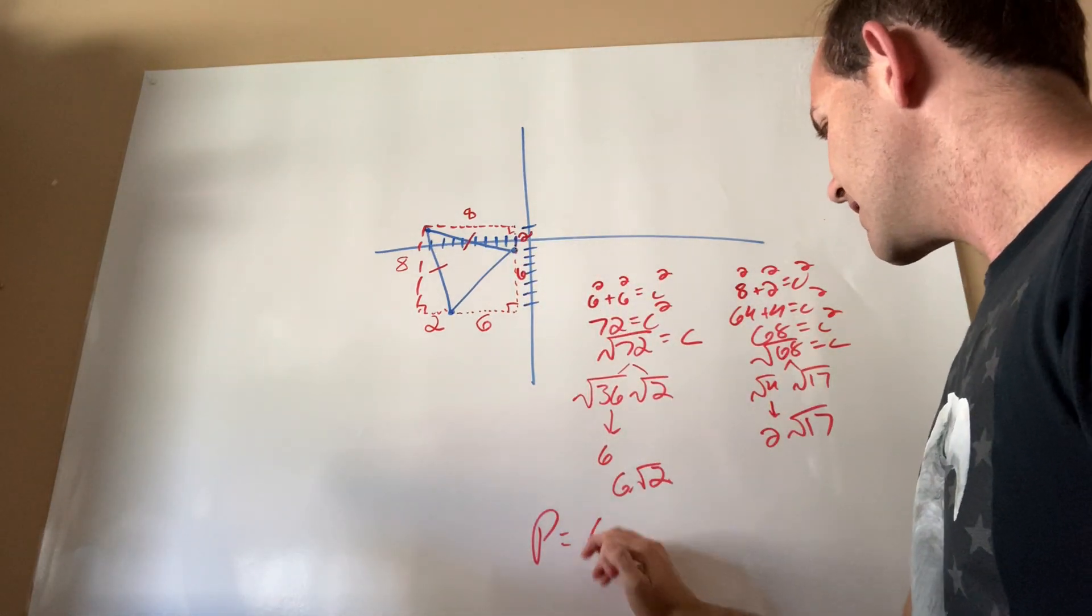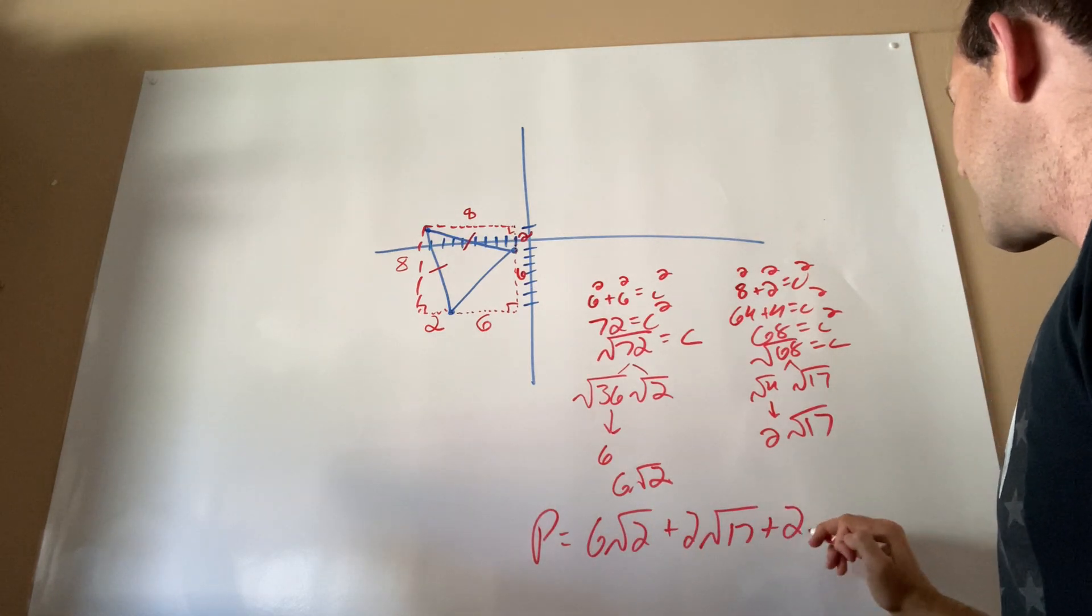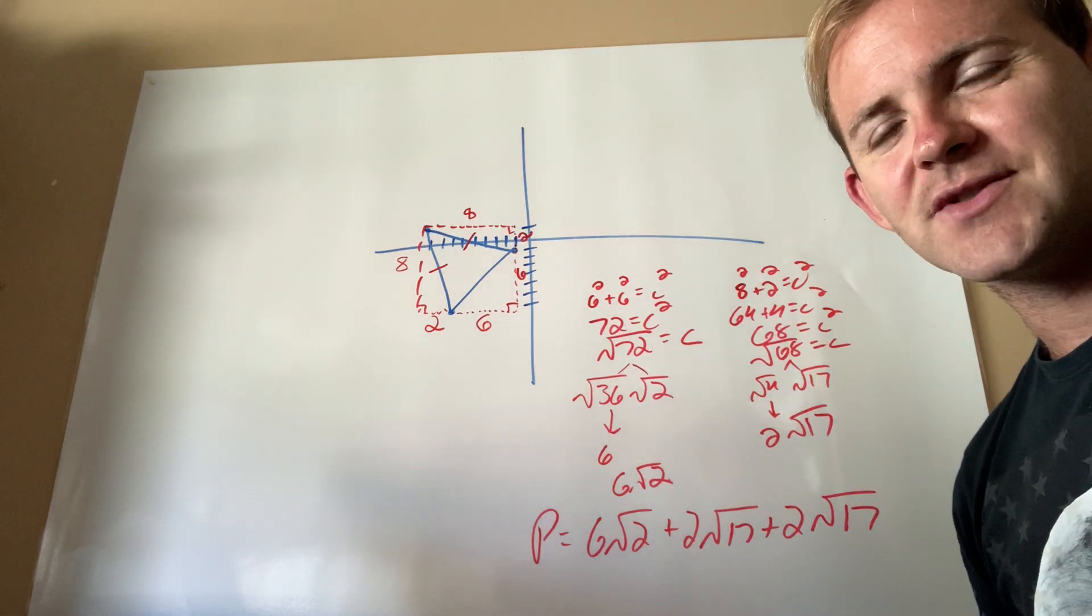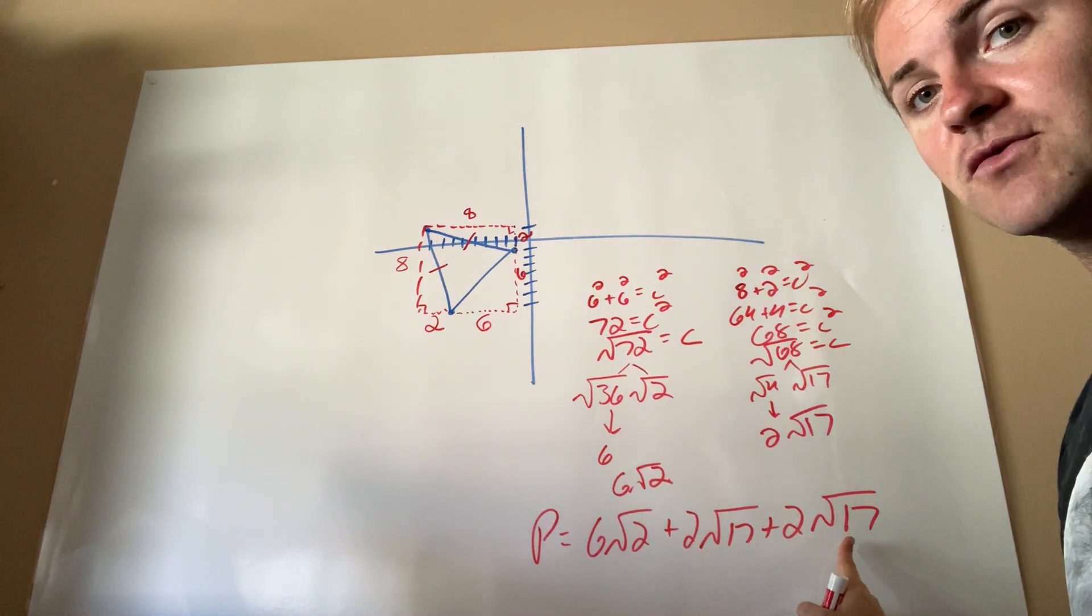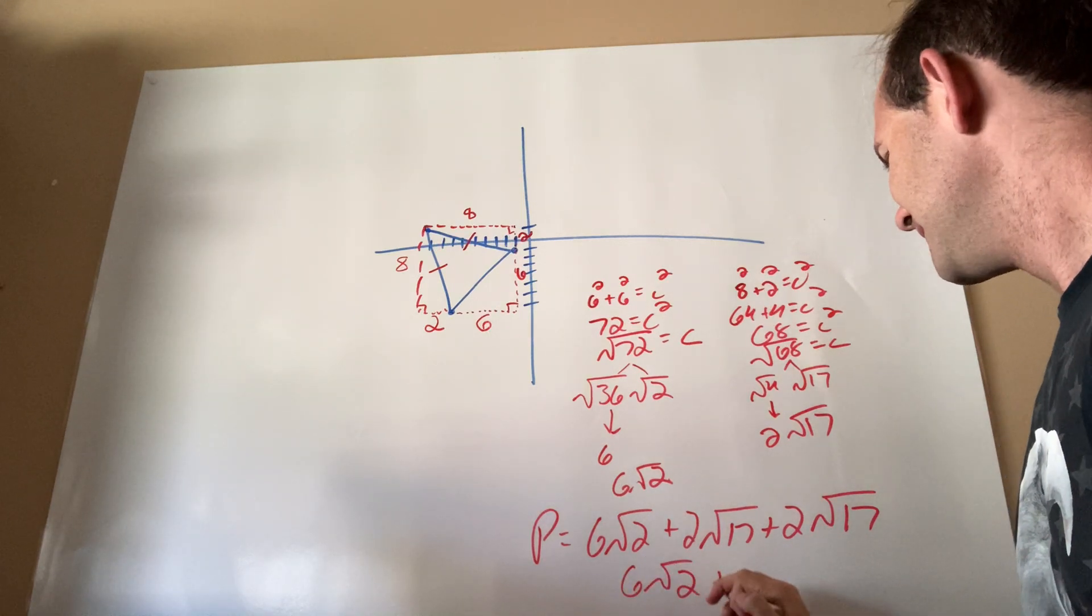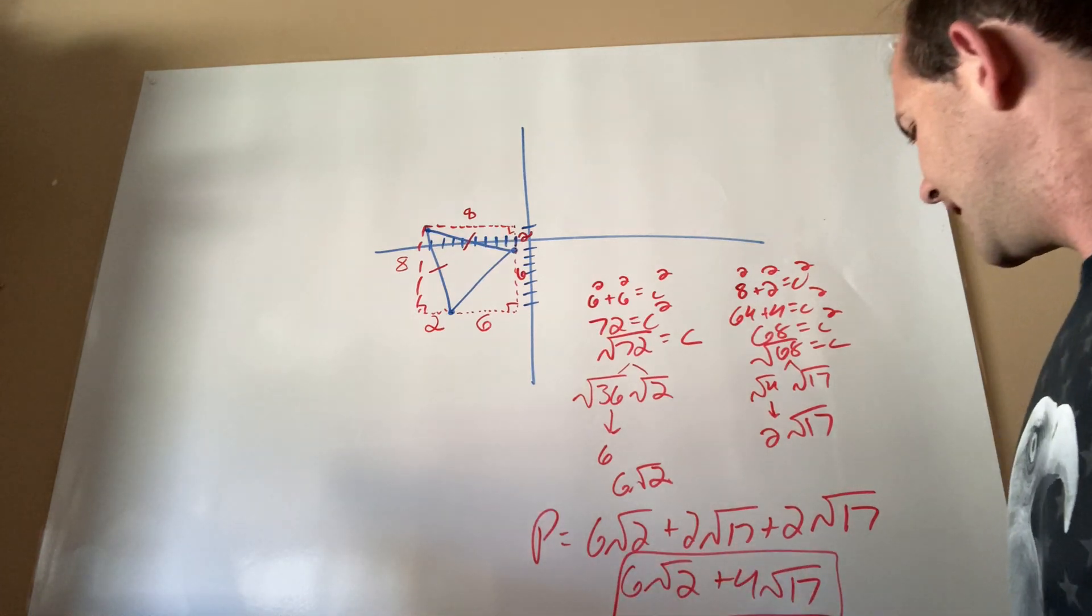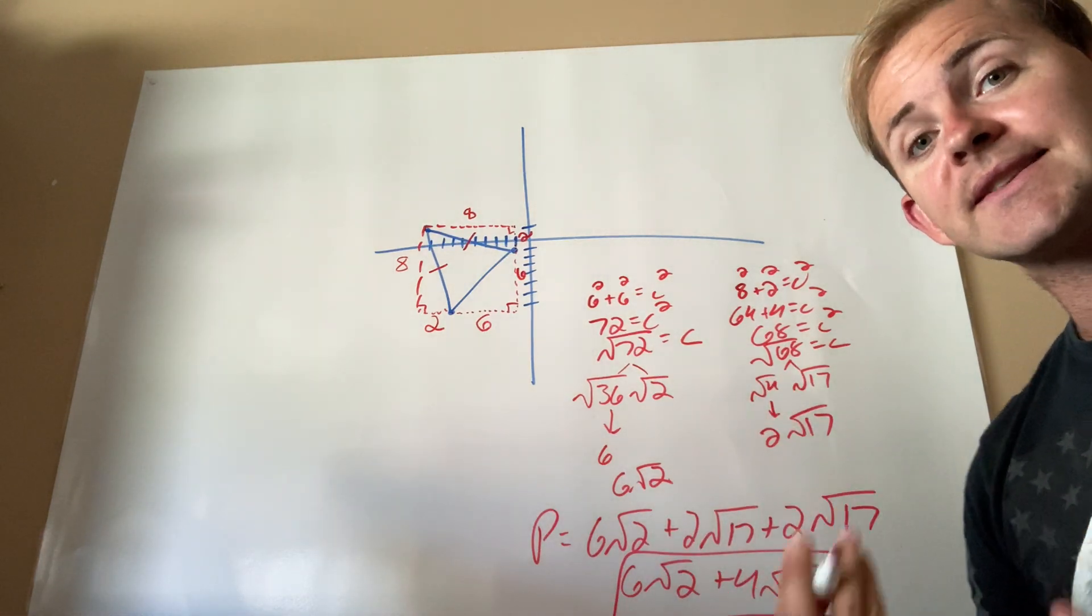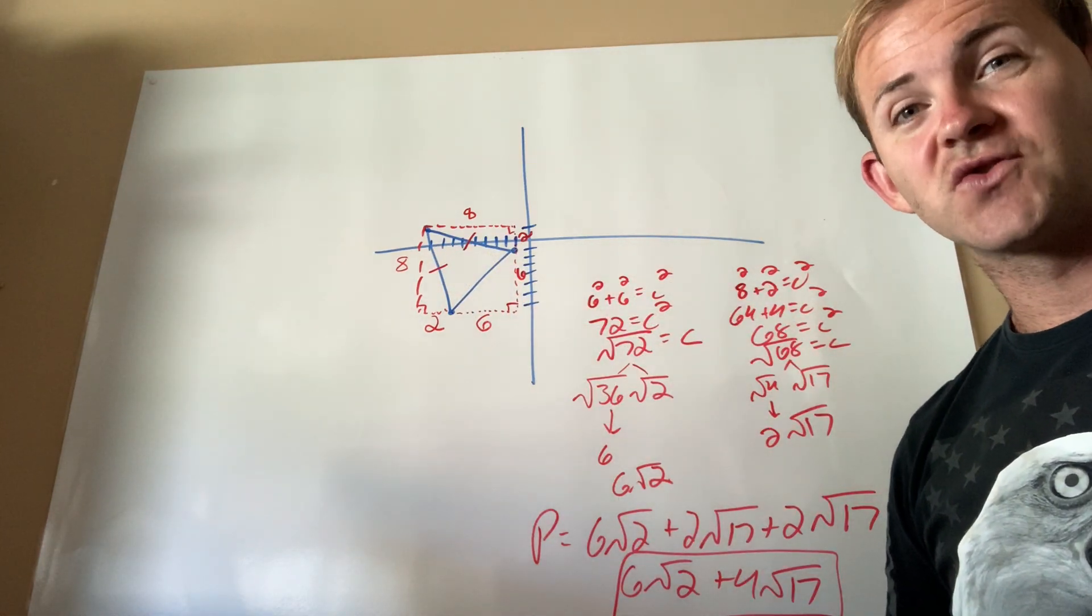So my perimeter would be as follows: 6 rad 2 plus 2 rad 17 plus 2 rad 17. And notice that normally when I ask you guys to enter answers on the computer, I do ask you to combine like terms. So if I had 2 rad 17s and I had 2 more, how many rad 17s do I have in total? I have 4 of them. So my final answer then would be 6 rad 2 plus 4 rad 17. But then the follow-up question would be, classify this triangle according to sides. Well, because only two sides were congruent, I would say that this is an isosceles triangle.